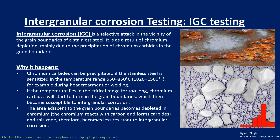The area adjacent to the grain boundary becomes depleted in chromium, because chromium reacts with carbon and forms carbides around that zone, making it less resistant to intergranular corrosion. This is the precipitation of chromium carbides at the grain boundaries, typically occurring during welding or heat treatment.